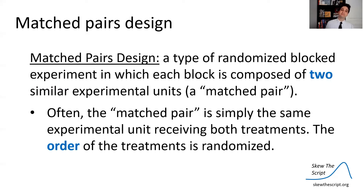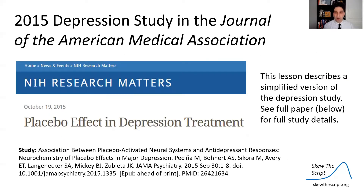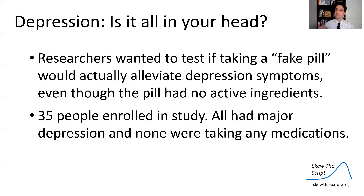We can do that through a matched pairs design — a type of randomized block experiment in which each block is composed of two similar experimental units, a pair. Often a matched pair is simply the same experimental unit receiving both treatments; they are paired with themselves and the order of treatment is randomized. We're going to look at a 2015 study published in JAMA, the Journal of the American Medical Association. Researchers wanted to test if taking a fake pill would actually alleviate depression symptoms even if the pill had no active ingredients.